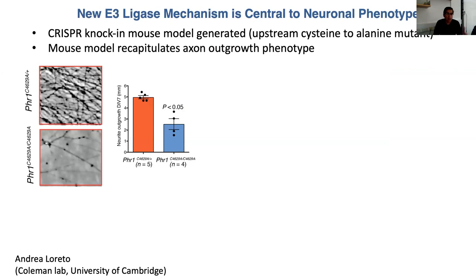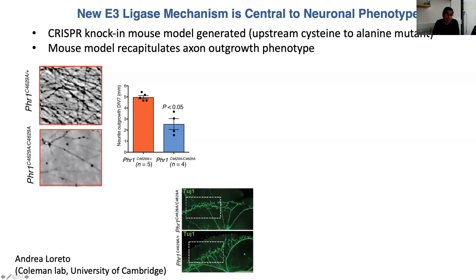A burning question was whether this new RCR mechanism relates to the neural phenotypes. We created a mouse model where by CRISPR we mutated the upstream cysteine to unreactive alanine, abolishing all RCR E3 activity while keeping the full-length protein intact. The neural developmental phenotype appeared to be recapitulated — in a heterozygous background, primary neurite outgrowth was prolific, but neurite outgrowth was significantly stunted in our heterozygous knock-in model. Neural development was also impaired in vivo, with the phrenic nerve only partially innervating the diaphragm, suggesting this point mutant knock-in recapitulates the total knockout phenotypes.